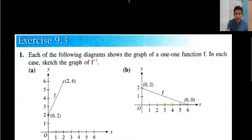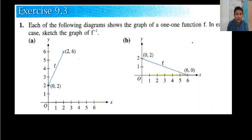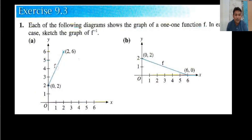For this purpose I have taken one question from Exercise 9.3. In this question each diagram has a one-to-one function. One-to-one means — I have made a video on Exercise 9.1, the first video — you should watch that to understand what a one-to-one function is and whether we can draw its inverse. To draw the inverse function, the function must be one-to-one. This is our requirement.